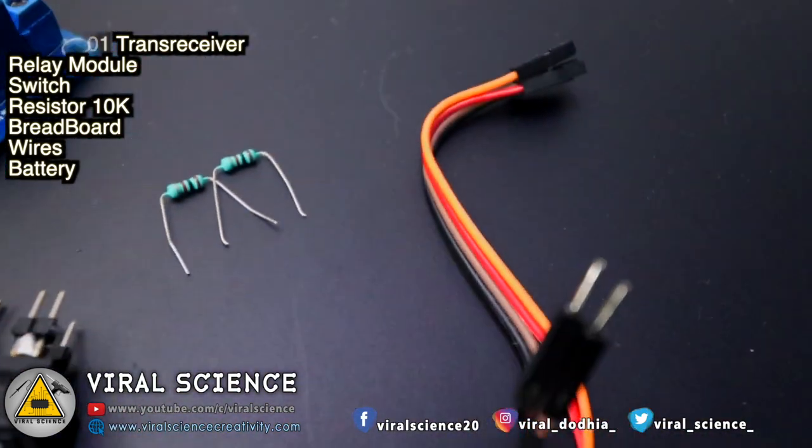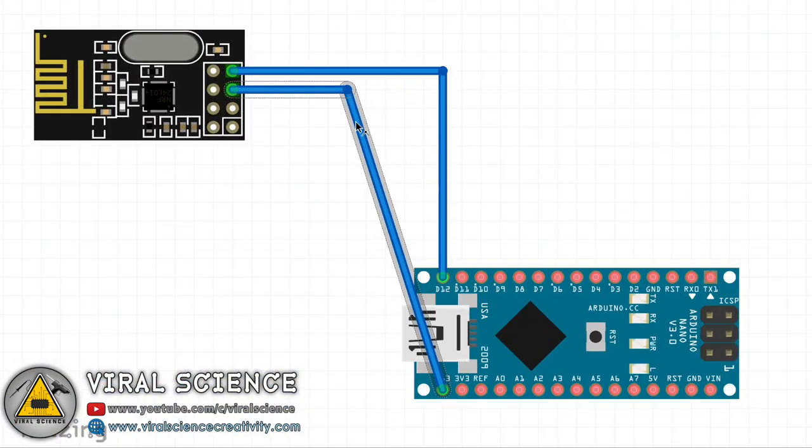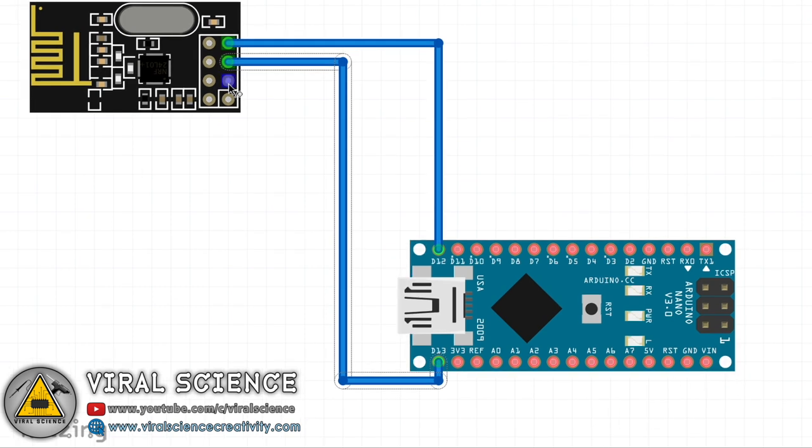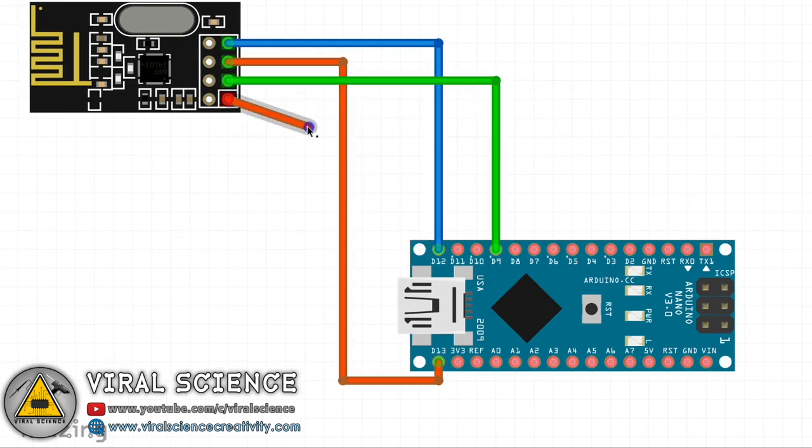Now follow the circuit diagram and connect your transceiver module with Arduino. This connection will be the same for both transmitter and receiver.